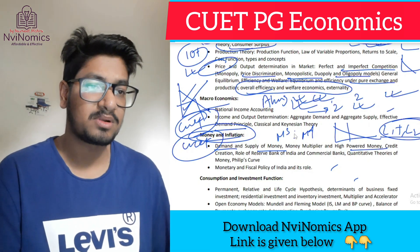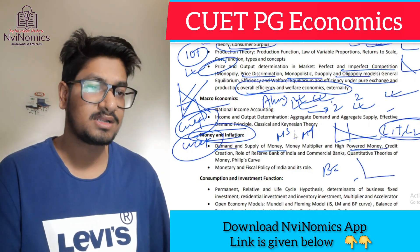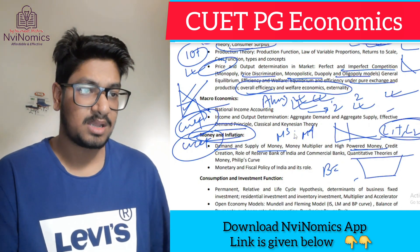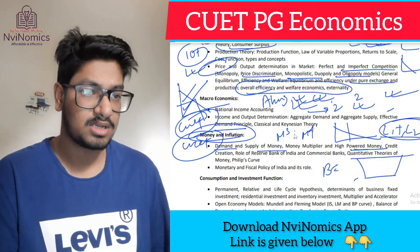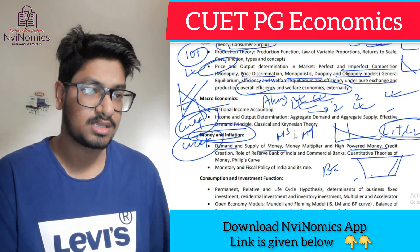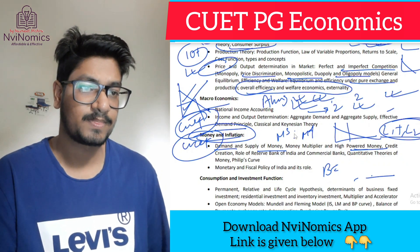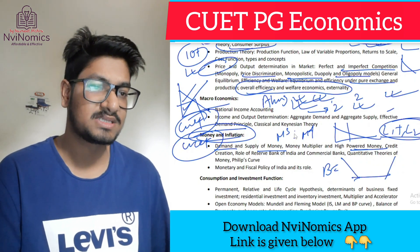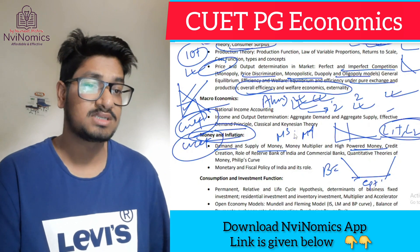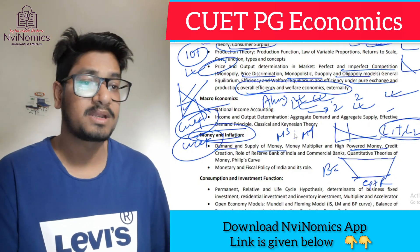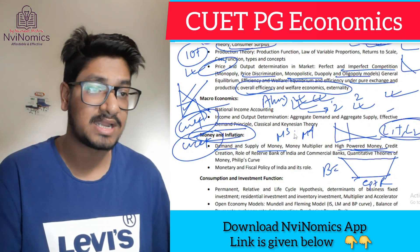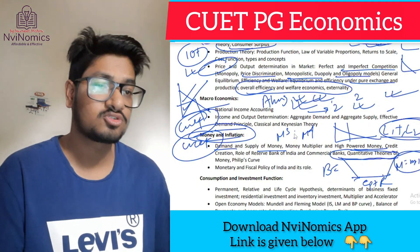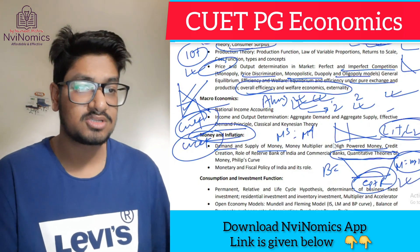Then there is high-powered money, also called base money. The diagram shows: base money equals total currency with the public plus total reserves. This creates total money in the economy — total money equals money multiplier times high-powered money. So base money is also known as high-powered money. These things you should know clearly.